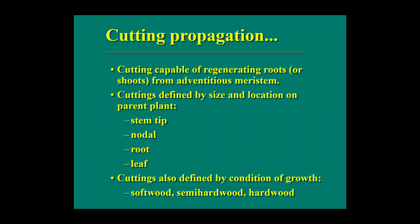The first method is cutting propagation. Cuttings are capable of regenerating roots or shoots from adventitious meristems. Cuttings are defined by their size and location on the parent plant. We can take stem tip, nodal, root, and leaf cuttings — these are all types of cutting propagation.